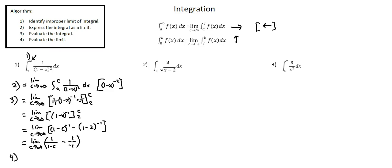Step four: evaluate the limit. The limit notation goes away as we input what the limit is approaching into any remaining c values. The first term, one over one minus c, becomes one over negative infinity, which approaches zero and disappears. The second term, minus one over negative one, equals one. Our answer is one.